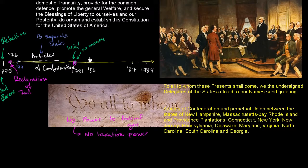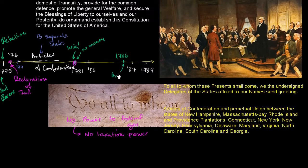This tension — how much power to put in the central government versus leaving it with the states — has existed throughout history, even starting with the Greek city-states. And since this is not the governing document for us now, something must have broken to want to replace it. By 1786, it was totally clear the document wasn't working. You had all sorts of disputes — like Maryland and Virginia having a horrible dispute over navigation and border rights — so they called an Annapolis Convention to try to fix things, but only five states showed up.